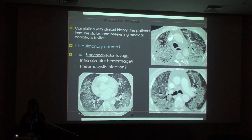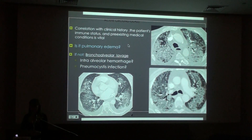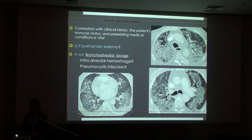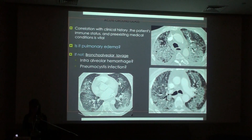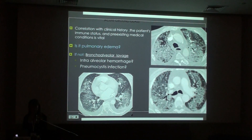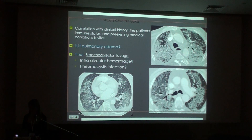For acute ground glass, it is very important to correlate with the patient's immune status and pre-existing medical condition. The first question should be: can it be pulmonary edema? For that, we need to analyze the size of the pulmonary veins, check for pleural effusion, and look for associated smooth thickening of the interlobular septa. If pulmonary edema is ruled out, the next step should be bronchoalveolar lavage, because it's very difficult to differentiate the different pulmonary diagnoses — the imaging can look nearly identical in pulmonary edema versus pneumocystis infection.